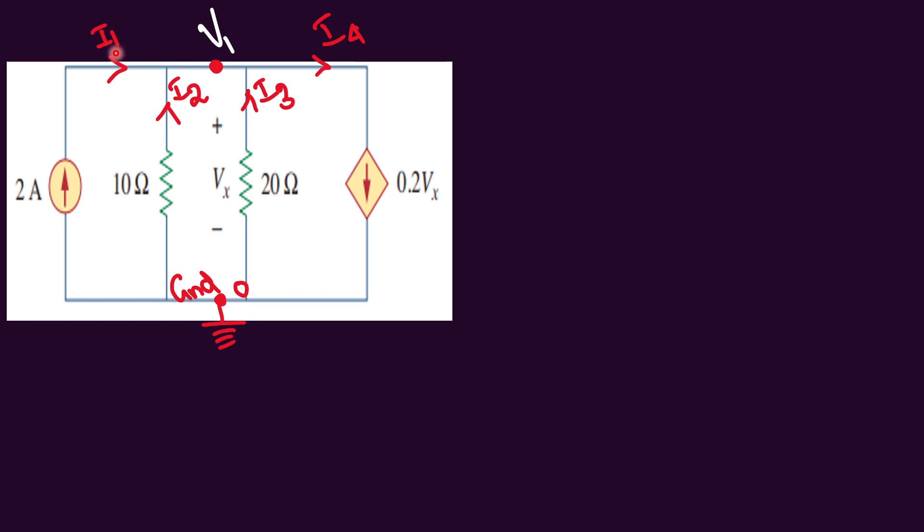Into which we assume the current as I1 current entering here and I2 current entering into this node and I3 current is also entering and I4 current is leaving. You can take any arbitrary directions for I1, I2, I3 other than I4 because this direction is already given in the problem.